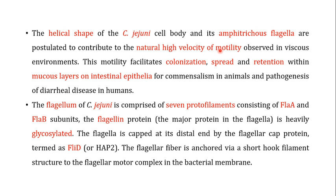When we talk about the flagellum of C. jejuni, it is composed of seven protofilaments consisting of FlaA and FlaB subunits. These A and B subunits make the flagellum, and when they combine, they form the major protein known as flagellin, which is a heavily glycosylated protein. The tip of the flagella is capped at the distal end by the flagellin cap protein termed FlID, also known as HAP2. The flagellin fiber is anchored via a short hook filament structure to the flagellin motor complex in the bacterial membrane.